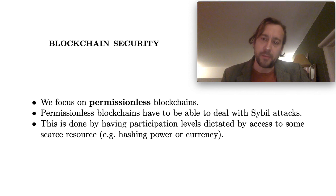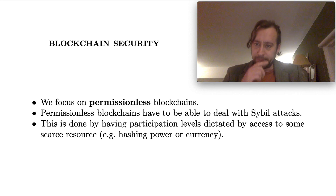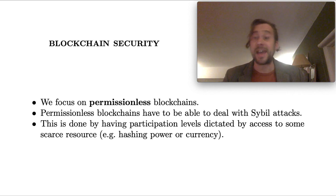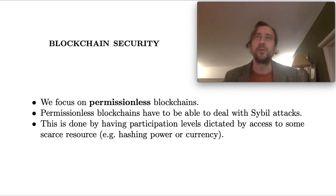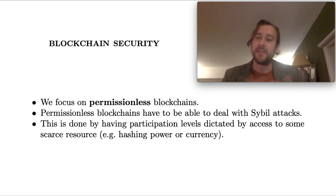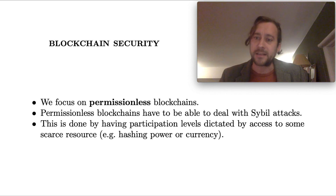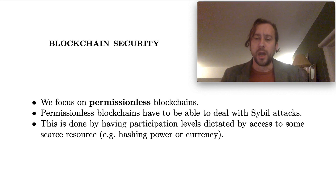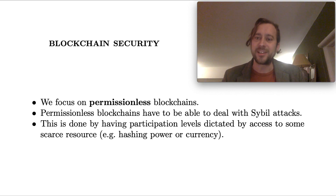Generally, the way this is done is by having a user's participation be dictated not by the number of identities they use, but rather by their access to some scarce resource. So if you're running a proof-of-work protocol, a user's level of participation will be dictated by their hash rate. If you're running a proof-of-stake protocol, then it's your currency balance that matters. If it's a proof-of-space protocol, then that is your access to memory capacity.